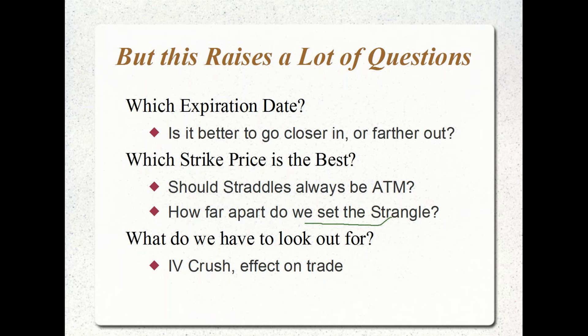Another thing to look out for is IV crush. We're not the only ones who know that earnings is coming up — the market as a whole knows, and we expect to see an increase in implied volatility as we get closer to earnings. This can be a pitfall: if the options' implied volatility is too high — meaning double the average range — you can expect a large crush on the position. You may even see an 8 to 10% movement in one direction and still not make a profit.